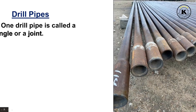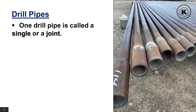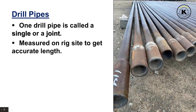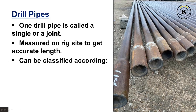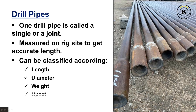One drill pipe is called a single or a joint. The drill pipe must be measured on the rig site to get an accurate length. The drill pipe can be classified according to many parameters such as length, diameter, weight, upset, and grade of steel.